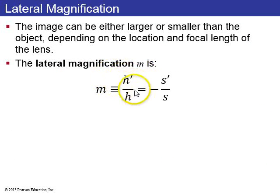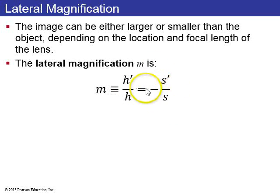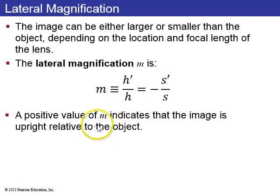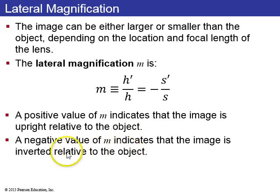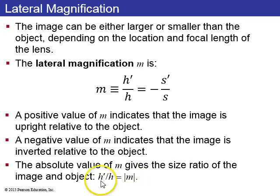Magnification is defined as the height of the image divided by the height of the object: M = h'/h, which equals negative s'/s, the image distance divided by the object distance. A positive value of M means the image is upright relative to the object; a negative value means it's inverted. For most converging lens cases both distances are positive, so M is negative and images are inverted. The absolute value of M gives the relative size of the image compared to the object.